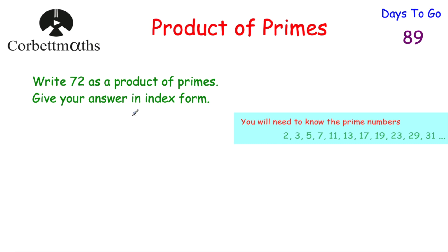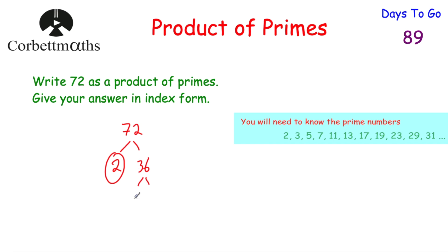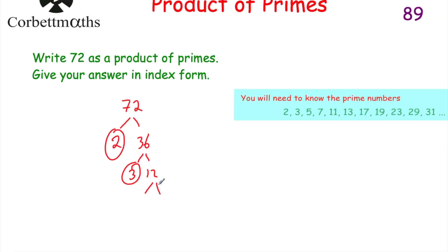Here we've got 72. To write 72 as a product of primes, I like to use a factor tree. I start with 72 and think of two numbers that multiply to give 72 — I'll choose 2 times 36. Two is prime, so we circle it, whereas 36 isn't prime, so we carry on. Next, 36 becomes 3 times 12. Three is prime, so circle it; 12 is not. Then 12 becomes 2 times 6. Two is prime; 6 is not, so we do two more branches: 2 times 3, and they're both prime. So 2 × 3 × 2 × 2 × 3 equals 72.